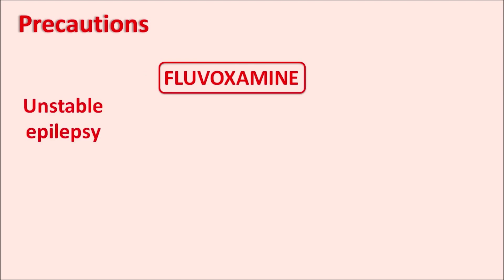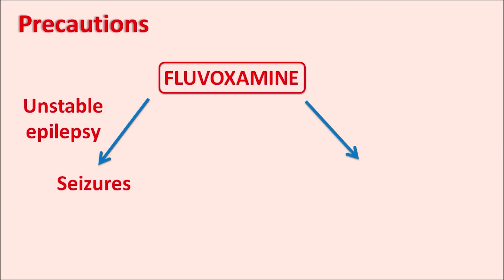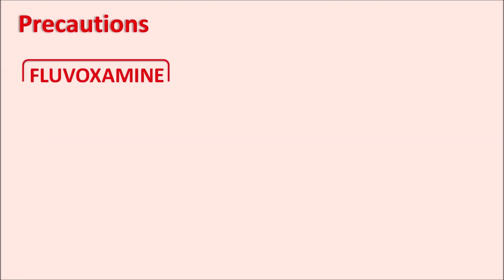When prescribed in patients with unstable epilepsy or a history of convulsions, fluvoxamine can increase the risk of seizures. As an antidepressant, this drug can also produce a manic phase or hypomanic phase, since reducing depression may elevate CNS stimulation. Any change in mood should be carefully monitored.